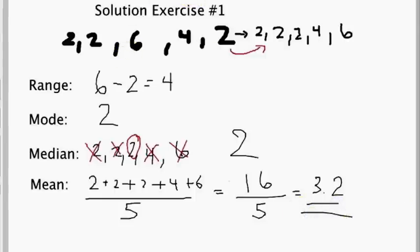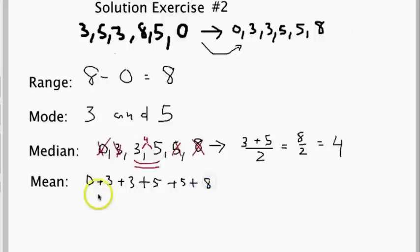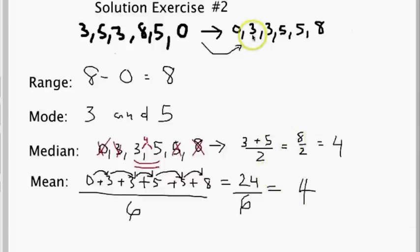For exercise two, the data organized smallest to largest is: 0, 3, 3, 5, 5, 8. The median: with six numbers, cross off the outermost pairs, leaving 3 and 5 in the middle — the median is 4, right in the middle of 3 and 5. The mean is 0 plus 3 plus 3 plus 5 plus 5 plus 8 divided by 6: that's 24 divided by 6, which equals 4. That concludes the video for range, mode, median, and mean.